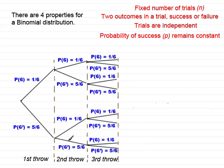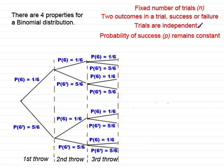What about where I throw a die three times — first throw, second throw, third throw — and a success is if I score a six? There are two outcomes: I either get a six or I don't. The trials are independent because when I throw a die, the score I get is unaffected by the previous throw. And the probability of success p remains constant — you can see it remains at one sixth all the way through the tree diagram. I've met all the conditions, so therefore I have a binomial distribution.